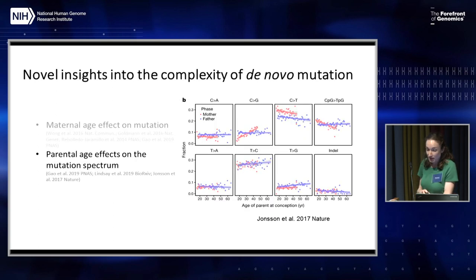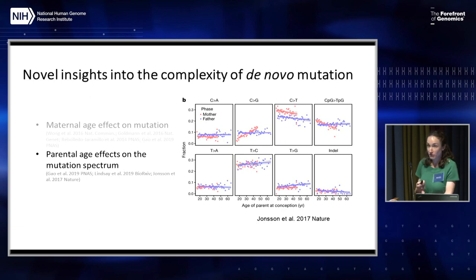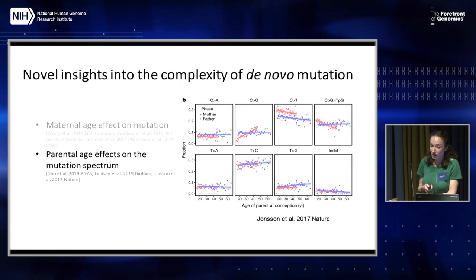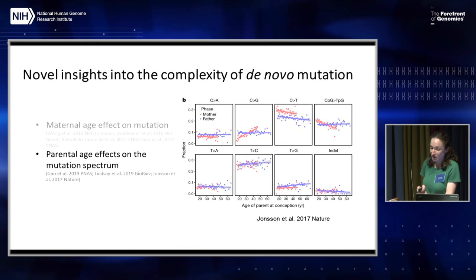Second, the particular types of new mutations that arise within genomes vary as a function of parental age. The fraction of new mutations belonging to each of eight mutational classes, plotted as a function of parental age at conception, shows through the variable slopes of those lines that the types of new mutations arising in genomes are really dependent both on sex and on age.